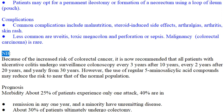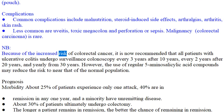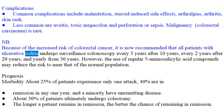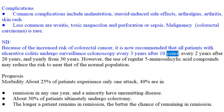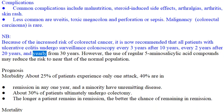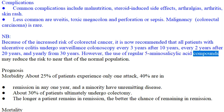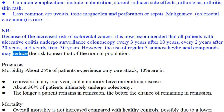Because of the increased risk of colorectal cancer, it is now recommended that all patients with ulcerative colitis undergo surveillance colonoscopy every 3 years after 10 years of disease, every 2 years after 20 years, and yearly from 30 years. However, the use of regular 5-aminosalicylic acid compounds may reduce the risk to near that of the normal population.